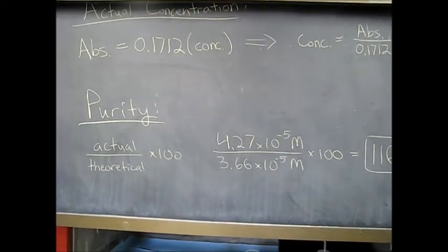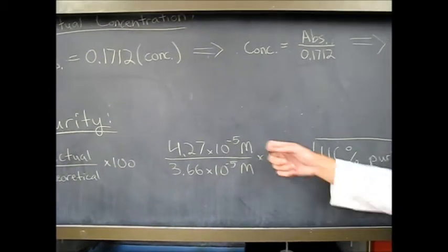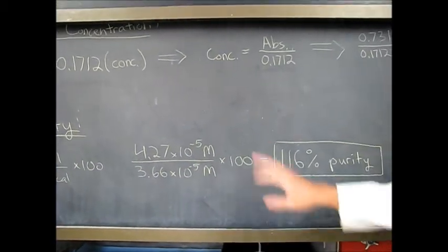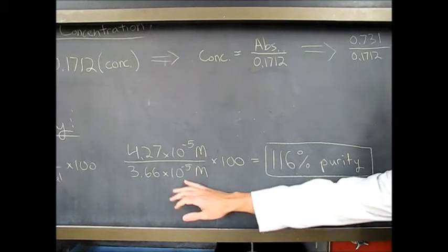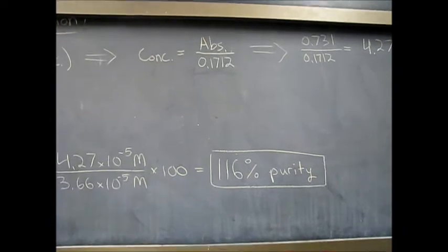So lastly for our purity. Again, it's just actual over theoretical times 100. So we actually got 4.27 times 10 to the negative 5. And this is our theoretical. You divide, multiply by 100, and you get 116% purity. So theoretically, this shouldn't be possible.